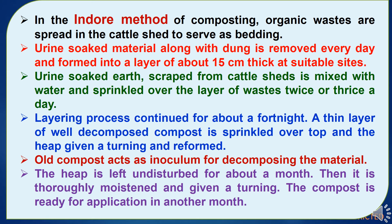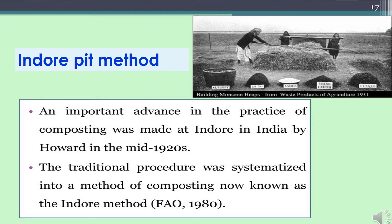The second composting method is the Indore method. In this method, organic wastes are spread on the cattle shed floor to serve as bedding. Urine-soaked material along with dung is removed every day and formed into a layer about 15 cm thick at suitable sites. Urine-soaked earth scraped from cattle sheds is mixed with water and sprinkled over the layer of wastes two or three times a day. Layering continues for about a fortnight. A thin layer of well-decomposed compost is sprinkled over the top and the heap is given a turning and reformed — old compost acts as inoculum for decomposing the fresh material. The heap is left undisturbed for about a month, then thoroughly moistened and turned. The compost is ready for application in another month. The Indore pit method was an important advance in composting practice made at Indore by Howard in the mid-1920s.